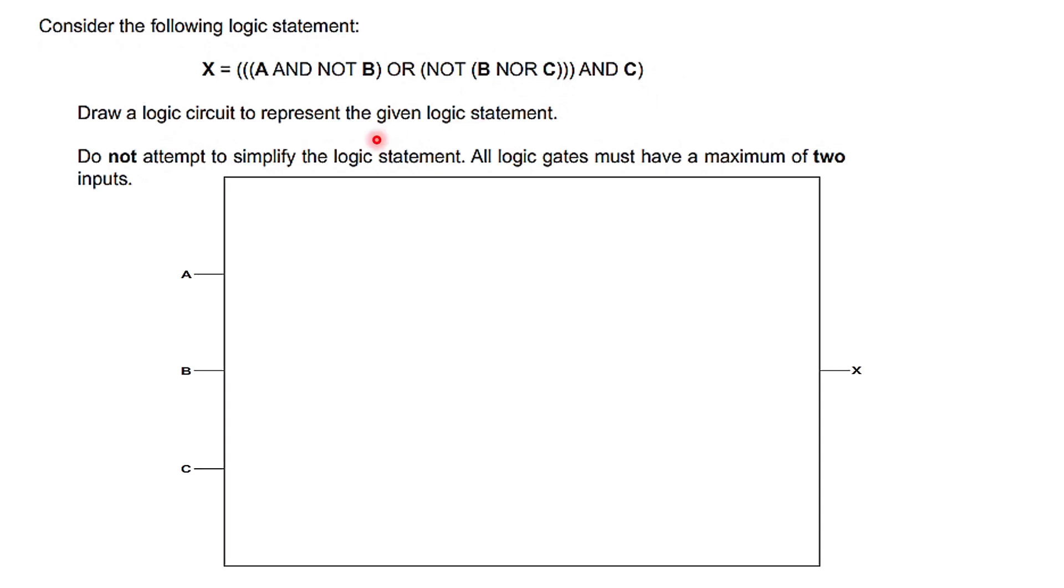So you can make a logic circuit. Now, you have an important point. Do not attempt to simplify the logic statement. All logic gates must have a maximum of two inputs. Like I had told you that every logic gate has a minimum of two inputs. But in this particular circuit, you can only take two inputs from each gate.